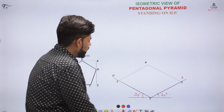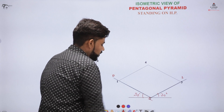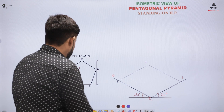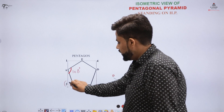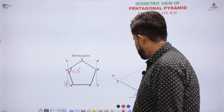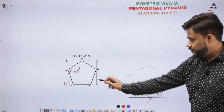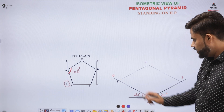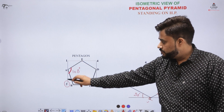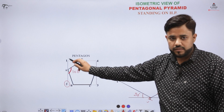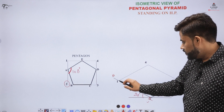Then after that, you have to fix or freeze one point there. Let's say point number two is fixed there. So from point two, you open the compass, mark the distance, and cut it over here. From point one, you open the compass, mark the distance, and cut it over here also. From four to three, you mark the distance and cut it over here.